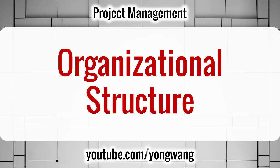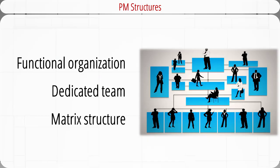Welcome to project management. In this video, I will talk about different types of organizational structures for project management. Once top management approves a project, it draws into the implementation stage. Project implementation relies on how an organization is structured. Three commonly used organizational structures for project management are functional organization, dedicated project teams, and the matrix structure. We will talk about them one by one.